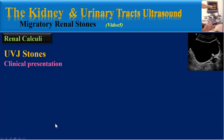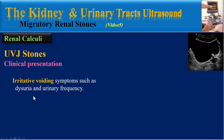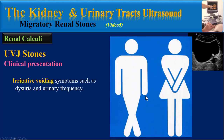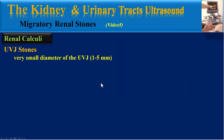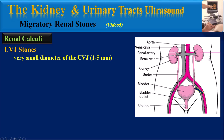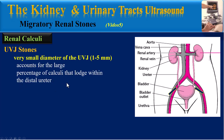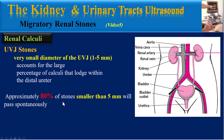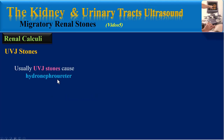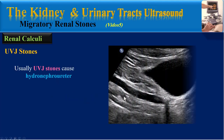Ureterovesical junction (UVJ) stones — clinical presentation. UVJ stones cause irritative voiding symptoms such as dysuria and urinary frequency. The very small diameter of the ureterovesical junction, about 1 to 5 millimeters, accounts for the large percentage of calculi that lodge within the distal ureter. Approximately 80 percent of stones smaller than 5 millimeters will pass spontaneously.